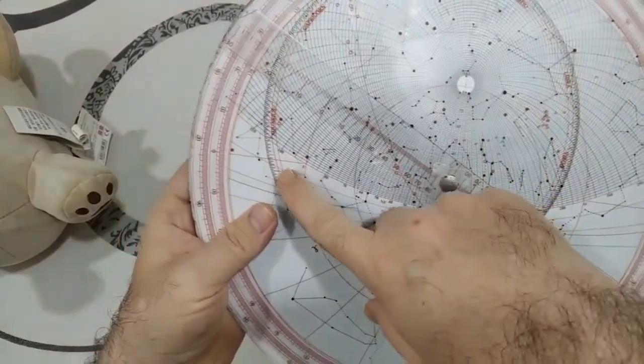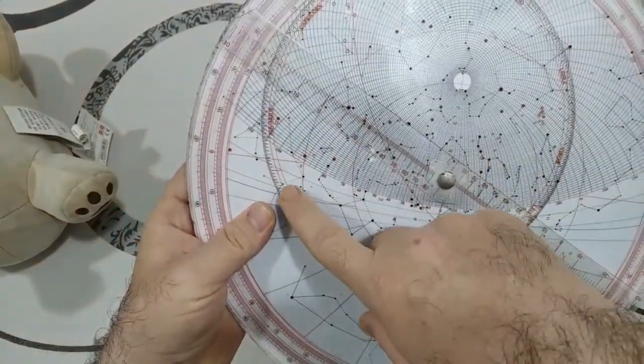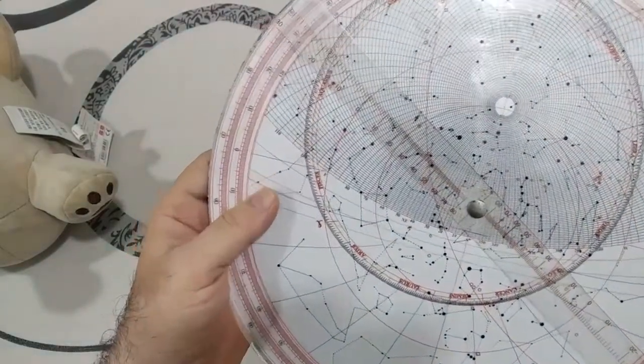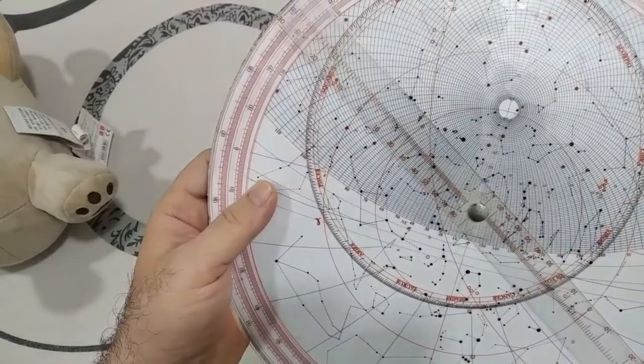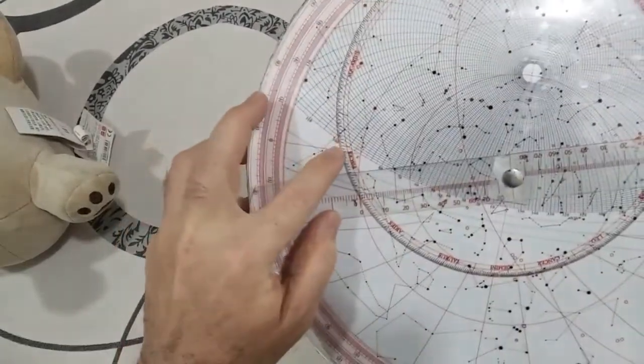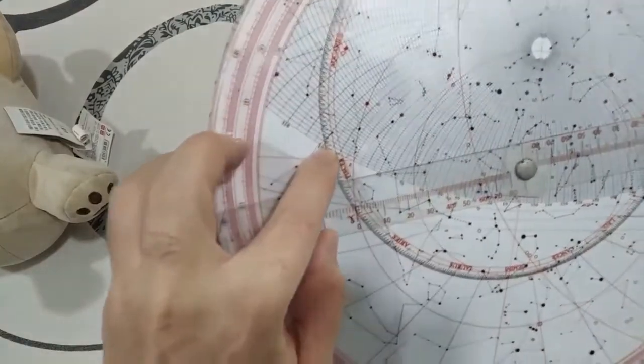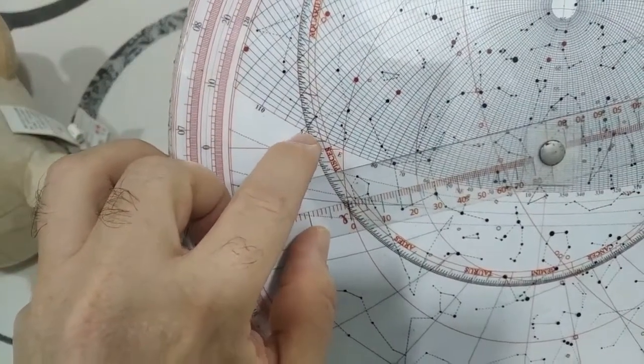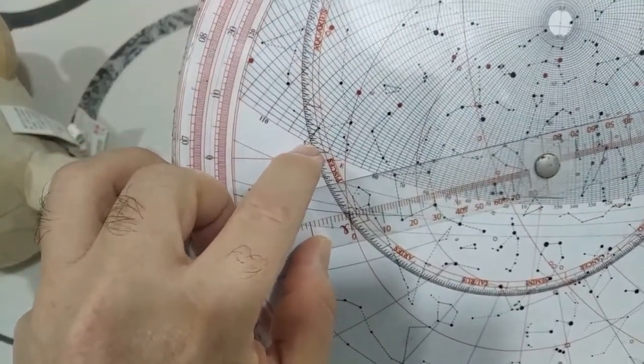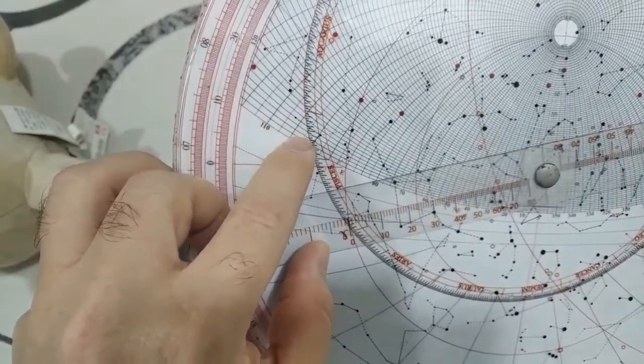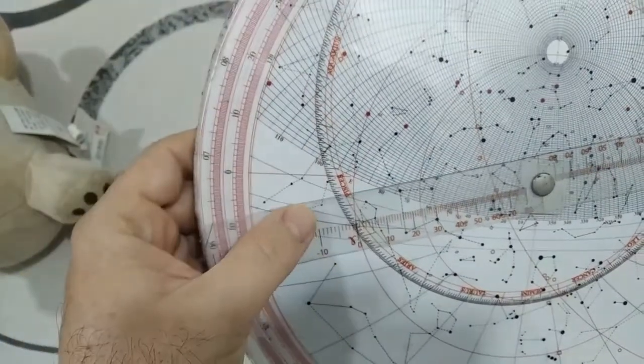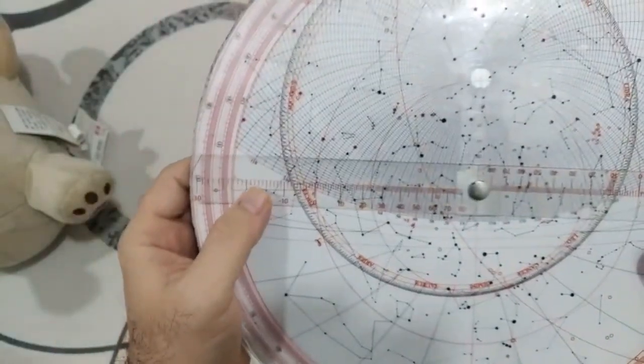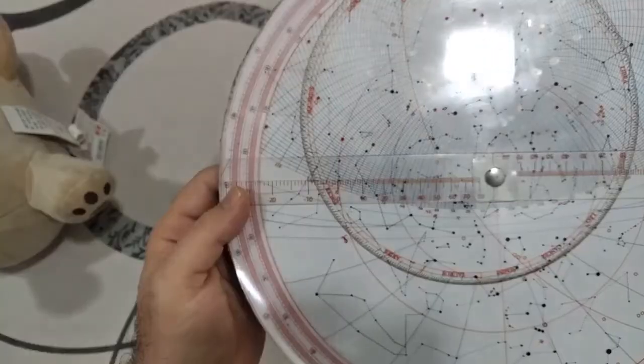Now rotate the rete so that 8th degree of Pisces is at the horizon. Now rotate the rule so that it passes through the intersection of horizon with 8th degree of Pisces. Read the time on the hour scale.